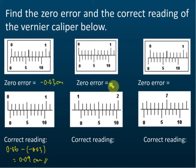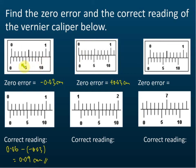The zero error is positive 0.03 cm — that's correct. For a positive zero error, we do not come from the back, we come from the front: one, two, three. Only for a negative zero error do we come from the back. One, two, three, four, five — the zero error is positive 0.03.